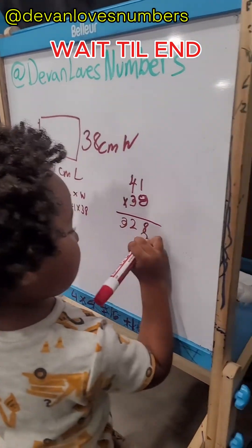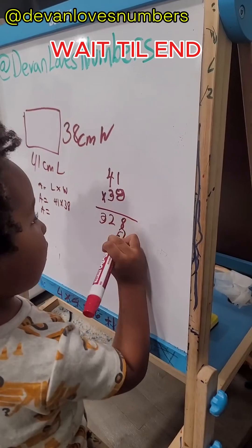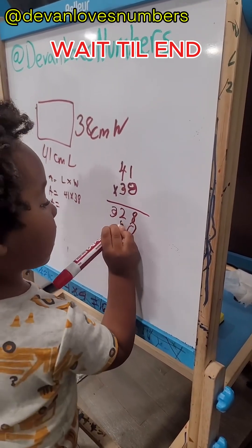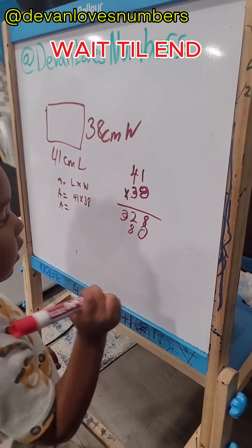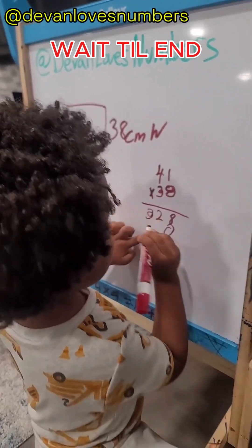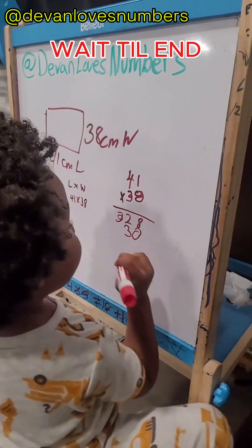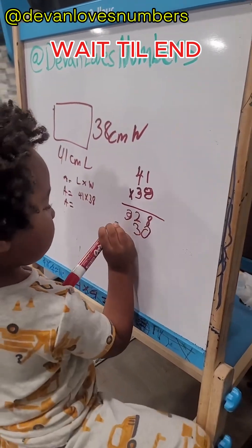That is 0. 1 times 8, 8. 1 times 3, 3. 4 times 3, 12.